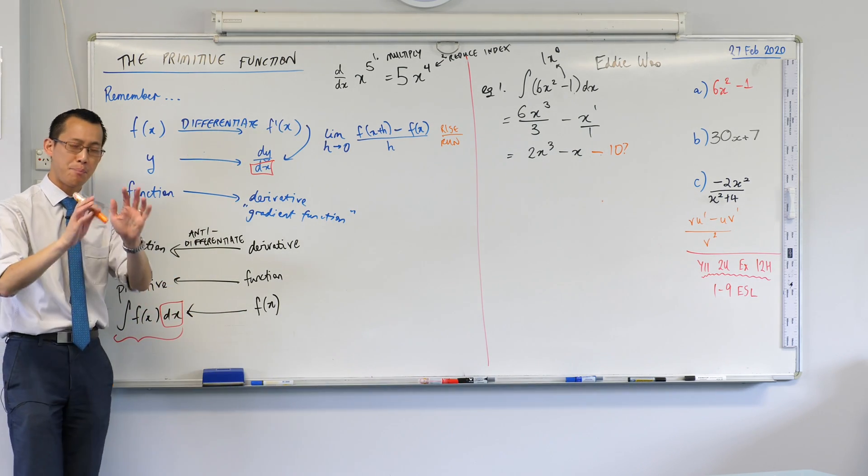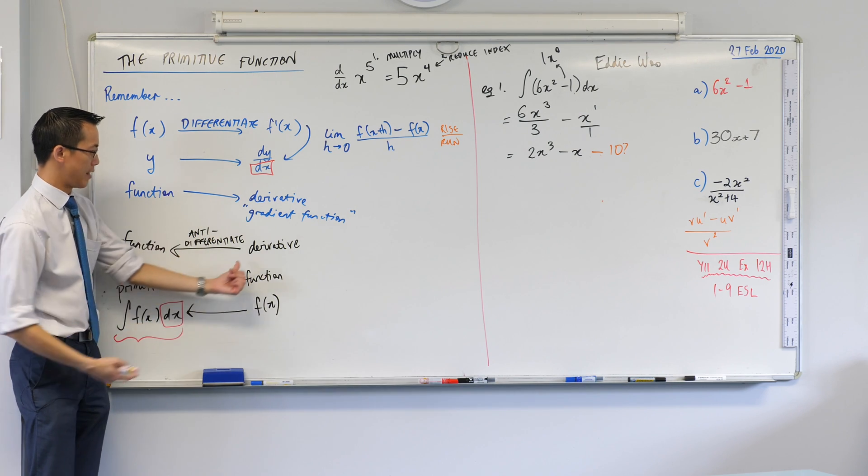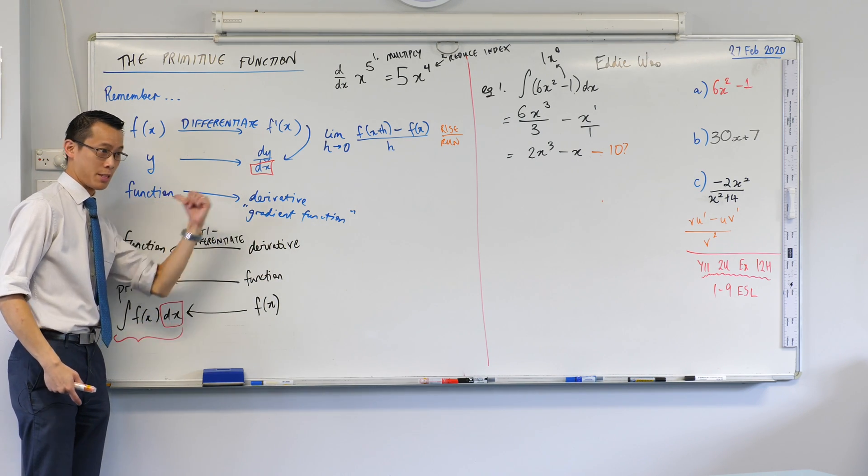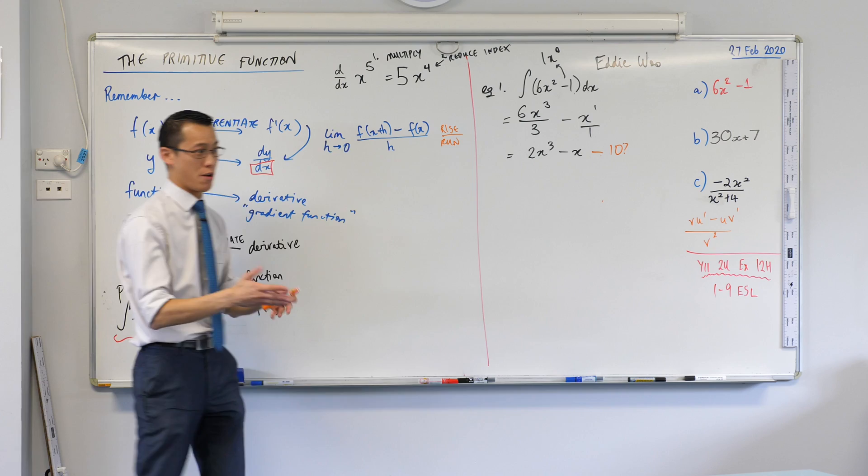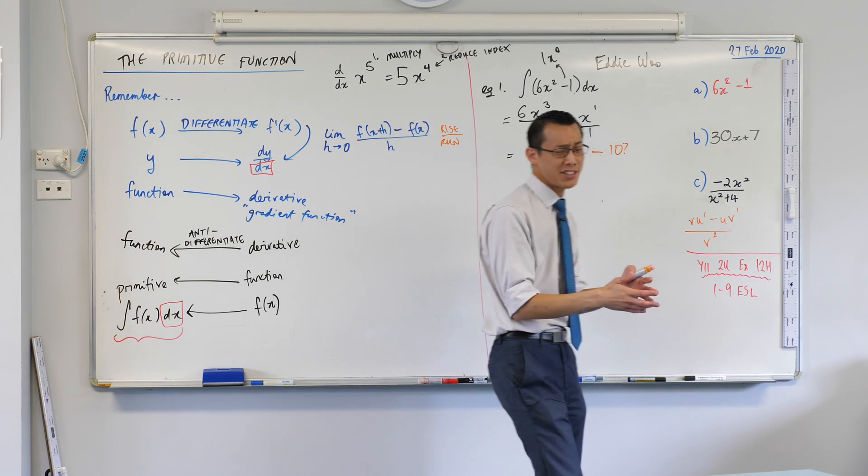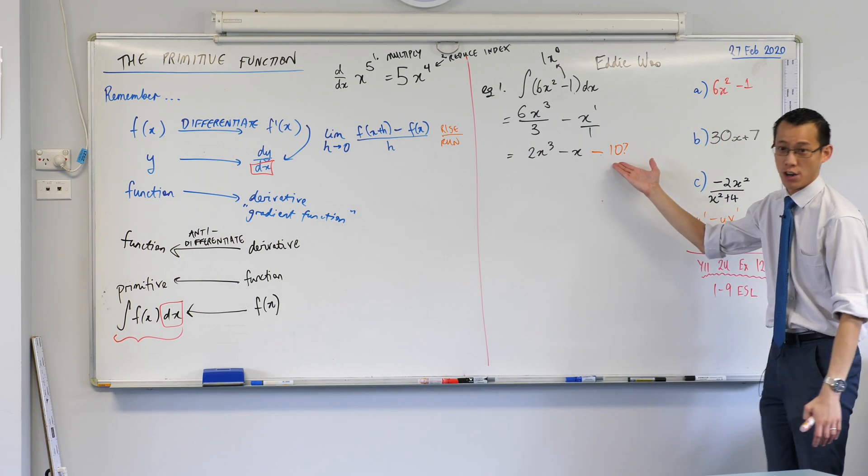So this is already our biggest fundamental difference. When you get a primitive, right? There isn't just a primitive. There isn't a single one. There's actually a whole family of them, right?